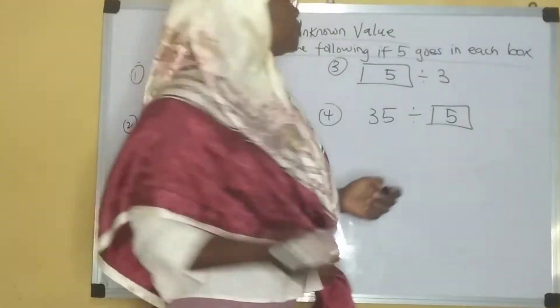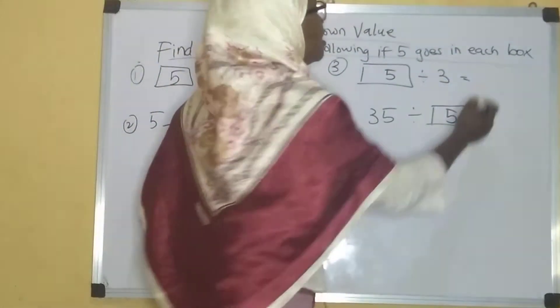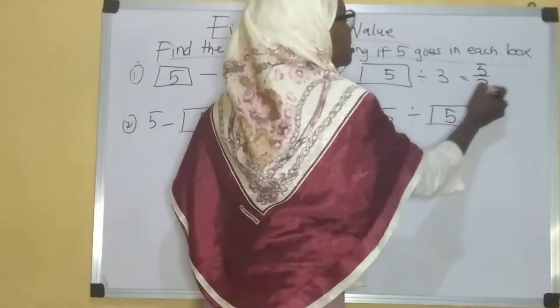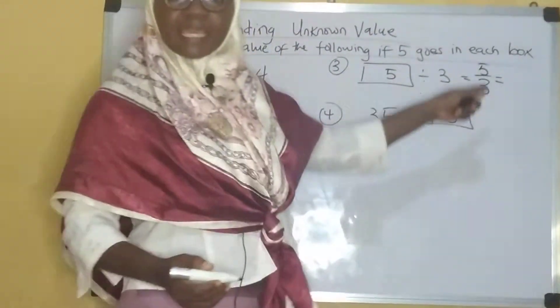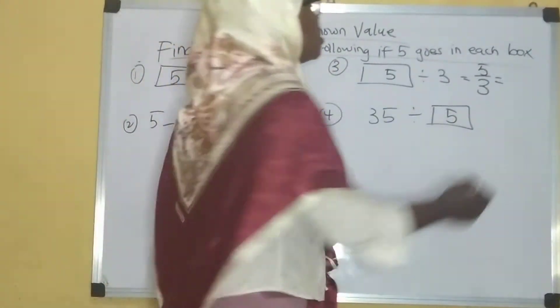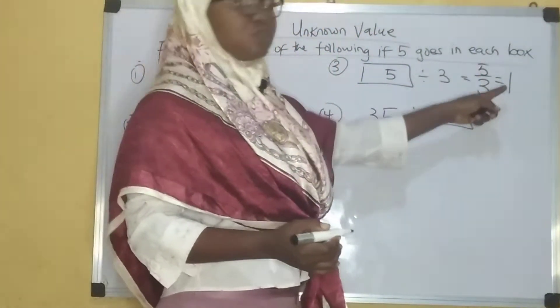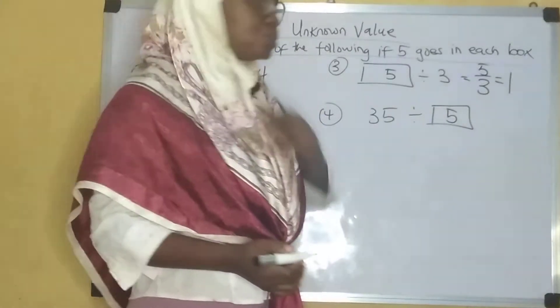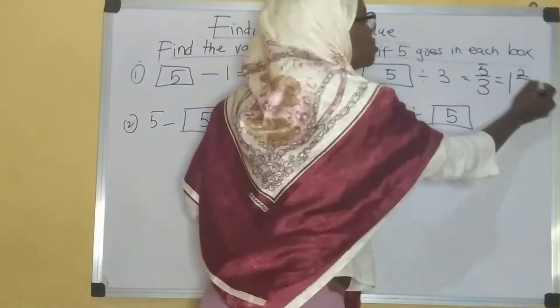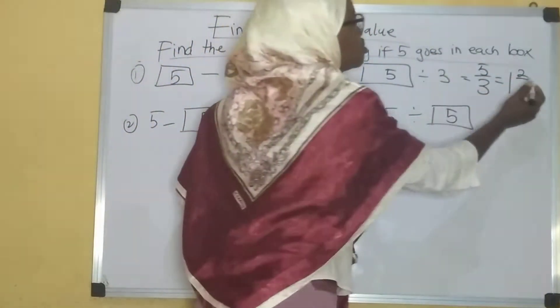Now this one is five divided by three, and that will give me one and two-thirds. How many threes can I possibly get in five? It's just one. What am I left with? I'm left with two, so it should now be two over this denominator which is three. Is that clear?